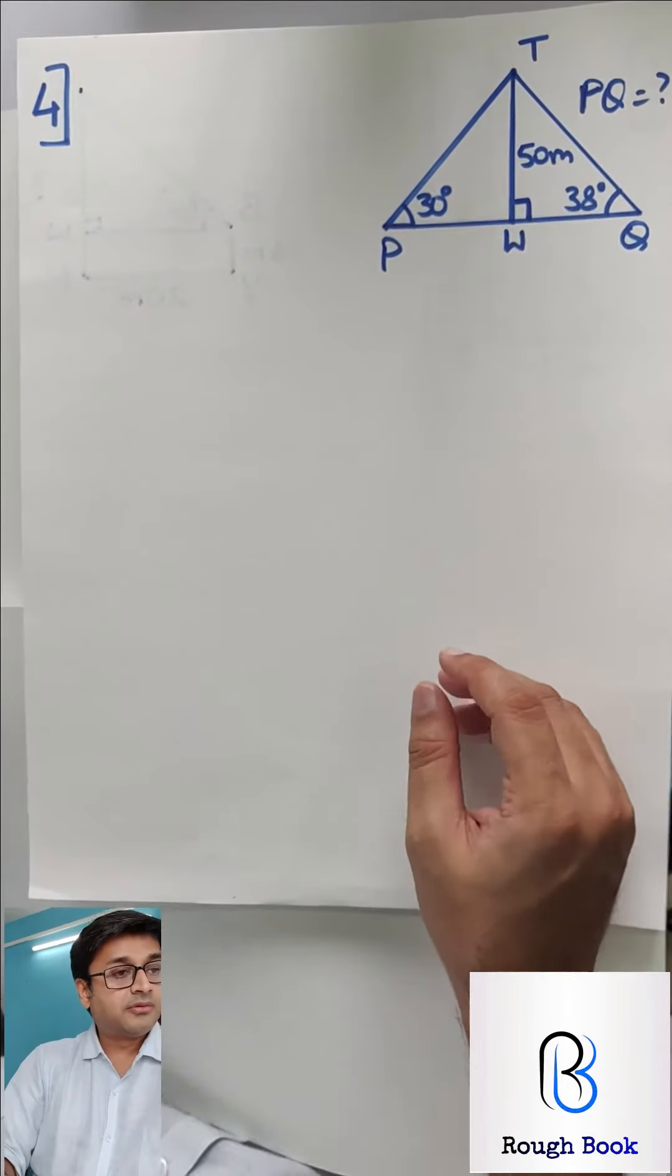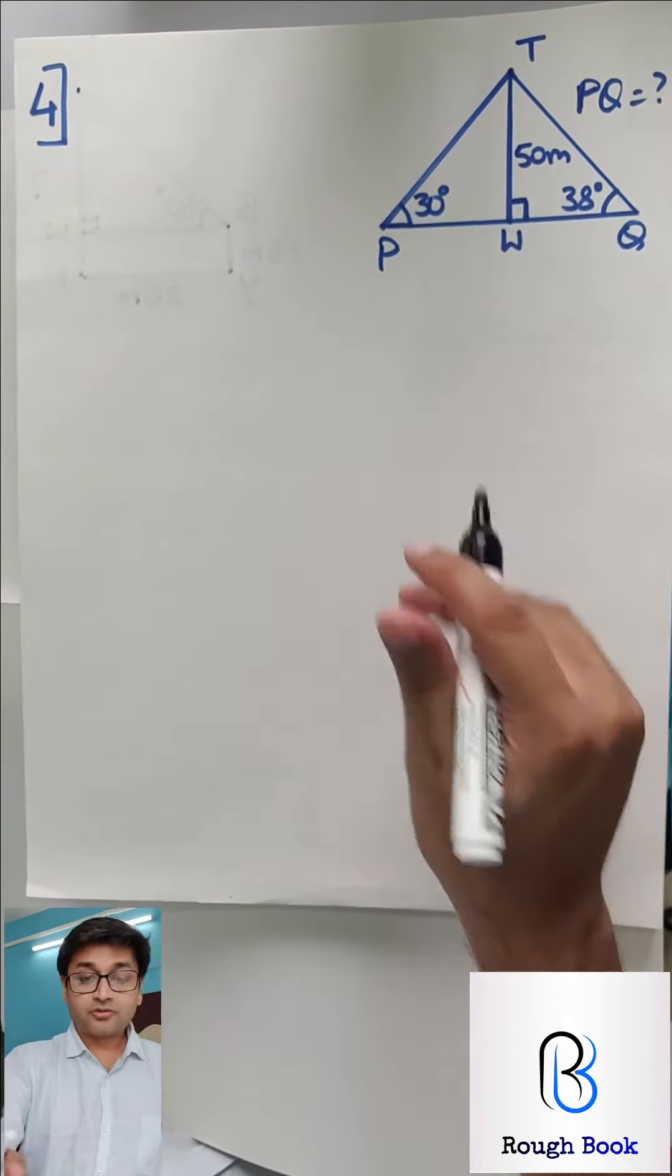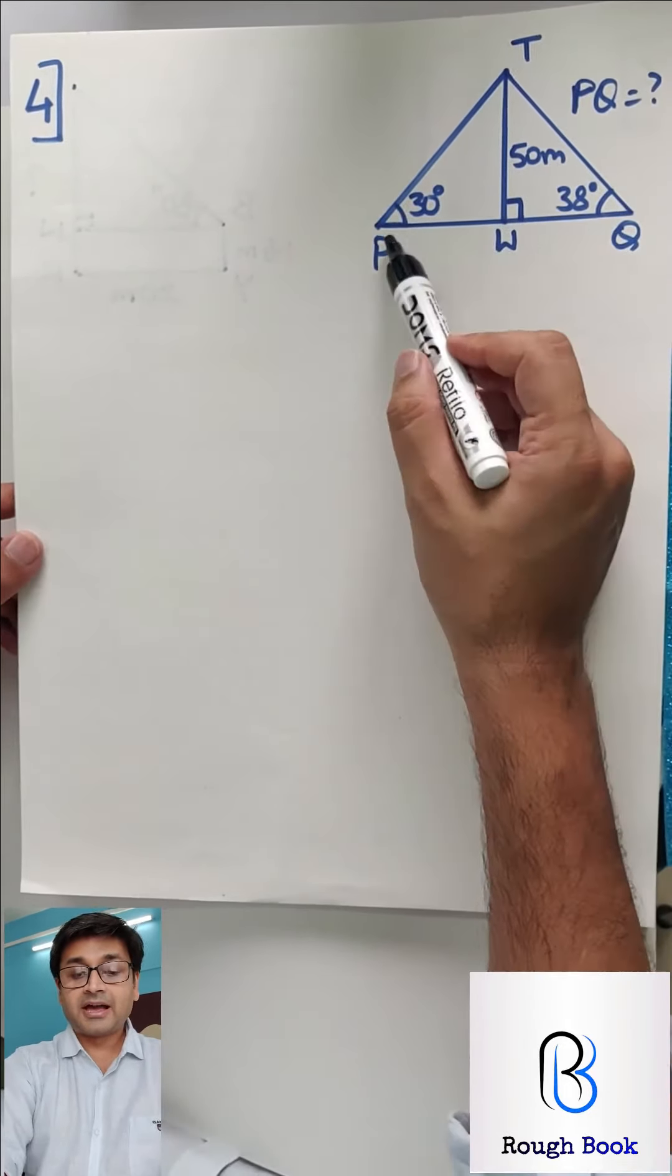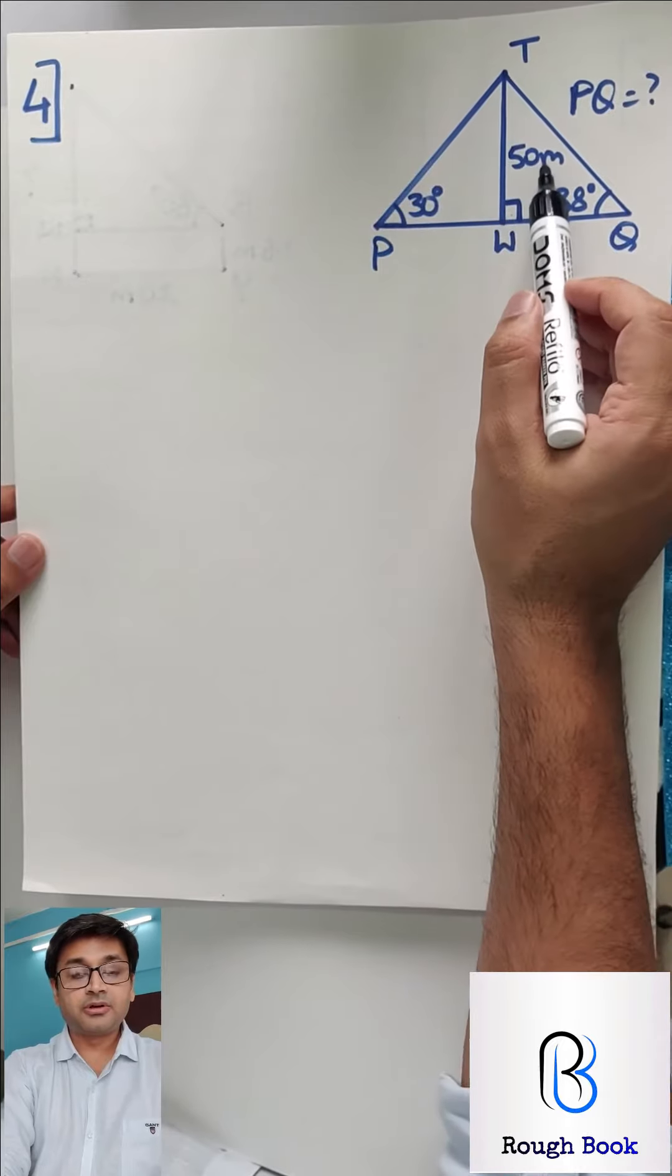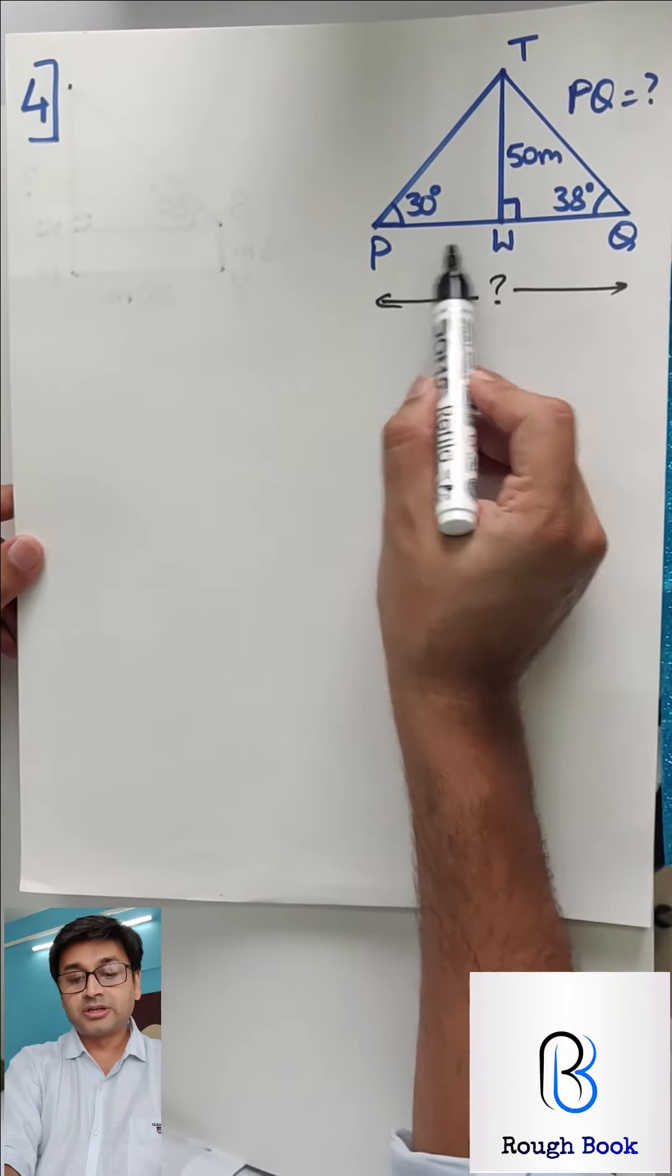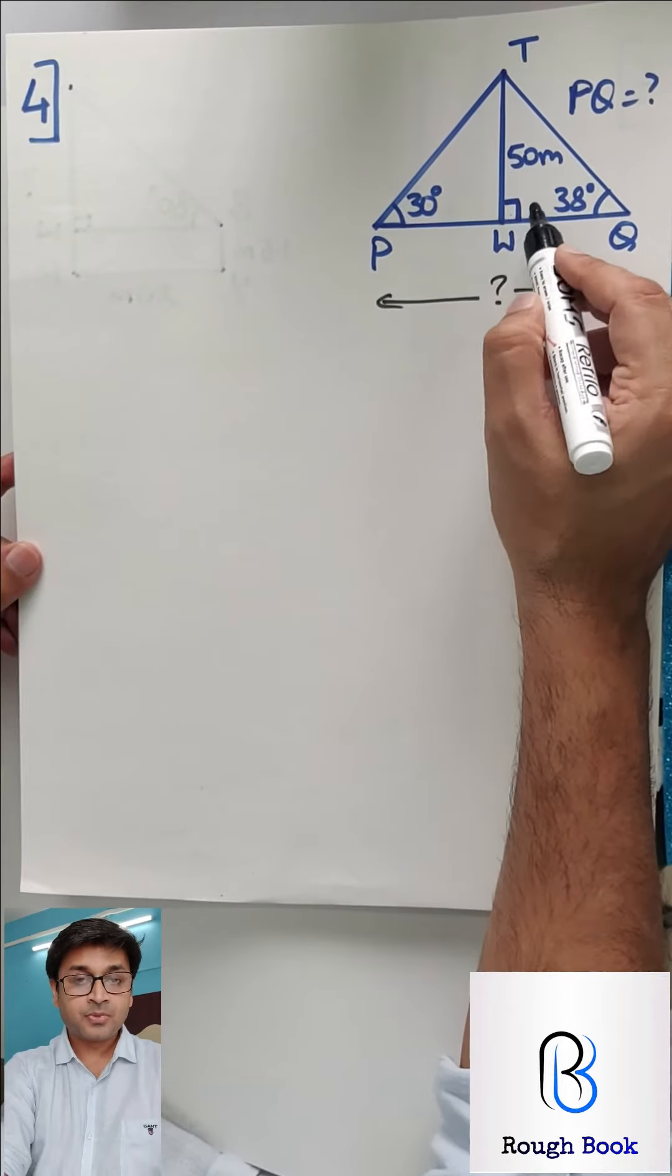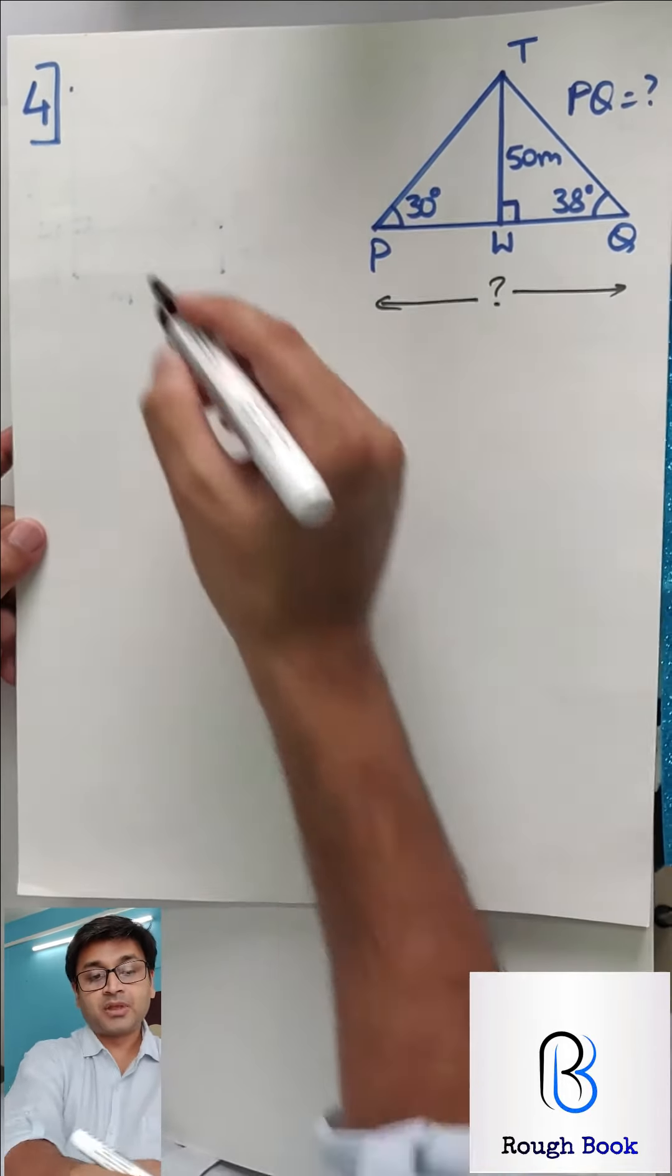Let's go to the next question. I want everyone to try sum number 4. So fourth one, what does it say? First draw the diagram, rough diagram and then come back. The question says two people are standing on the opposite side of the tower. Angle of elevation is 38 and 30. So first one 30, next one 38. Height of the tower is 50. Find the distance between the two people, that is PQ. So your entire question is to find these two. You will take this triangle, find this, take this triangle, find WQ and then you can add them.